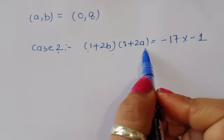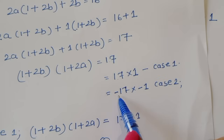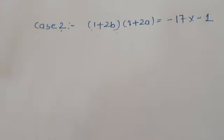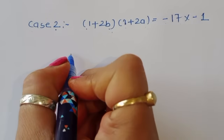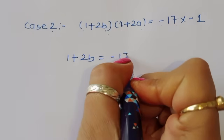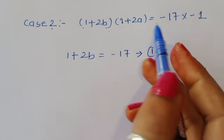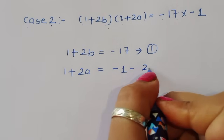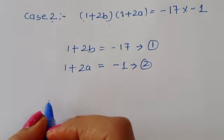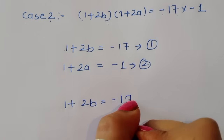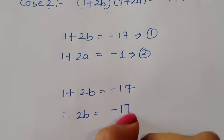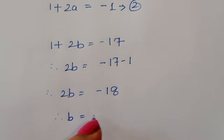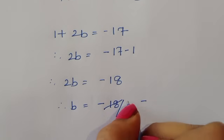Case 2: (1 + 2b)(1 + 2a) = (−17) × (−1). Comparing LHS and RHS, equation 1 gives 1 + 2b = −17, therefore 2b = −18, therefore b = −18/2 = −9. So the value of b is −9.